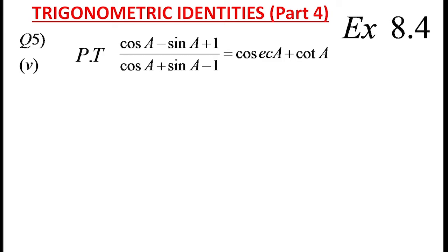Hi students, today we are discussing trigonometric identities part 4, that is exercise 8.4 question number 5 fifth part. The question is prove that cos A minus sin A plus 1 whole divided by cos A plus sin A minus 1 equal to cosec A plus cot A.